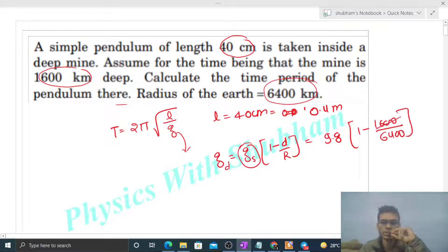So this becomes 1 by 4. So 1 minus 1 by 4, that is 3 by 4. 9.8 times 3 by 4. So now we can find out the value of time period.